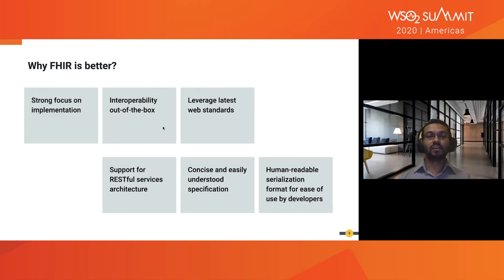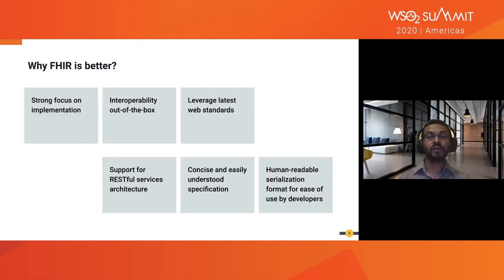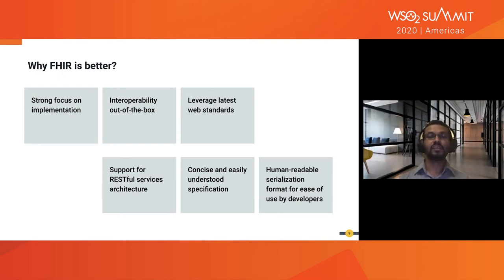In contrast to HL7v2, FHIR is far better when it comes to implementation. When they designed the FHIR specification, they put a strong focus on implementability so that the developer community and health IT providers would adopt the standard and easily implement FHIR across enterprises. Interoperability is provided out of the box with FHIR. FHIR has a set of base resources and allows you to extend those base resources to fit your region or country. For example, the US has its own variations — the US Core, DaVinci implementation guide — which extend the base FHIR resources. FHIR also leverages the latest web standards like XML, JSON, HTTP, and OAuth2.